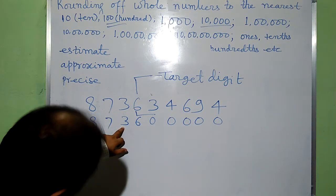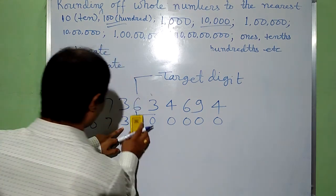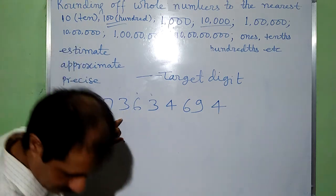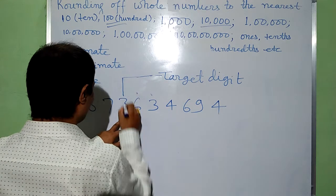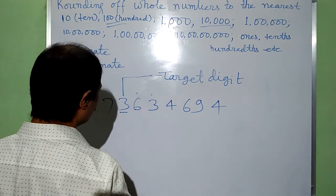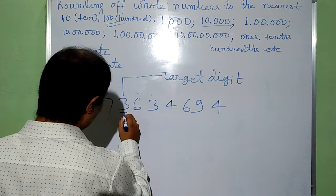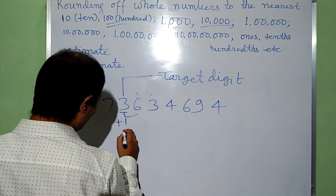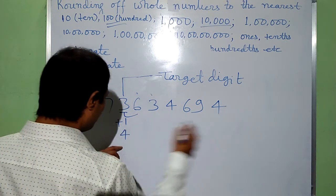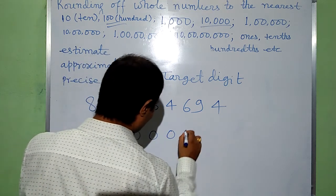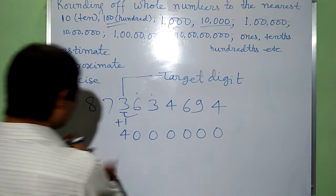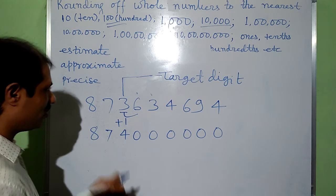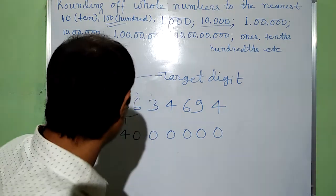We can also round the same number to a different place. For another target digit, we look just to its right side — that is 6, which is greater than 5. So we add 1 here: 3 plus 1 gives 4. The rest of the digits to the right will be 0, and the left side we need not change. In this way, we can solve any problems like this.